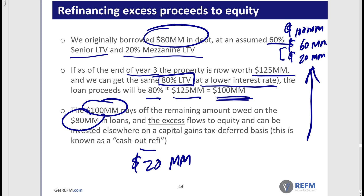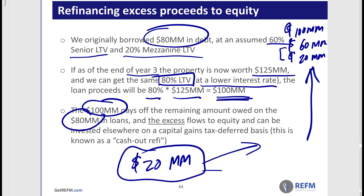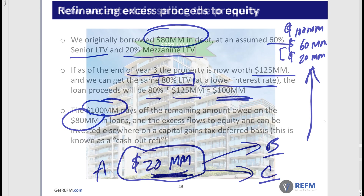The $100 minus the $80 gives us $20 million. We can take that $20 million on a tax-deferred basis and now go out and buy property B and property C. This is one of the oldest plays in the book in terms of how people build a real estate portfolio. Just because we take this money and spend it as equity over here doesn't mean that we no longer owe it as debt over here on property A.